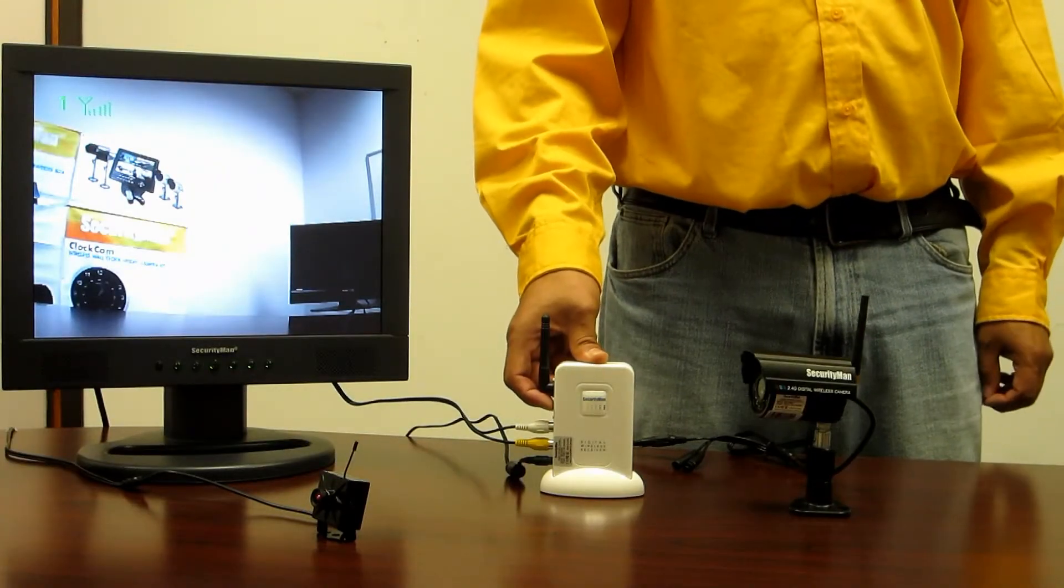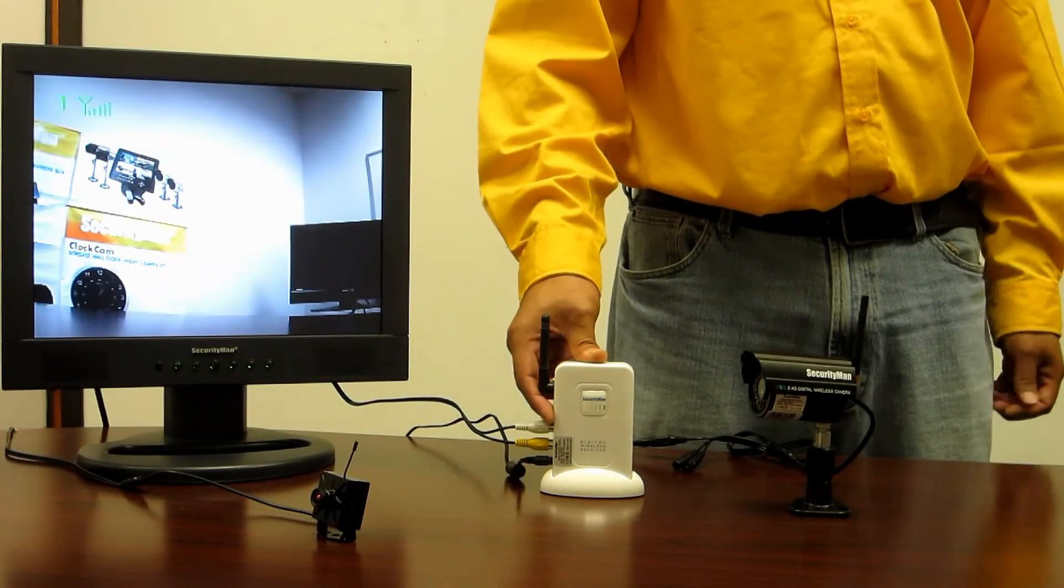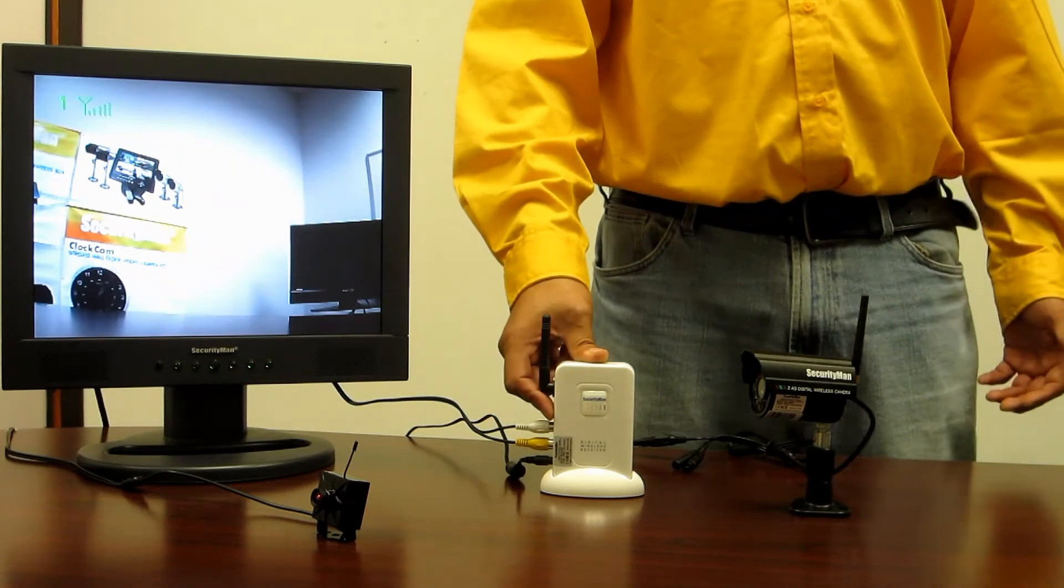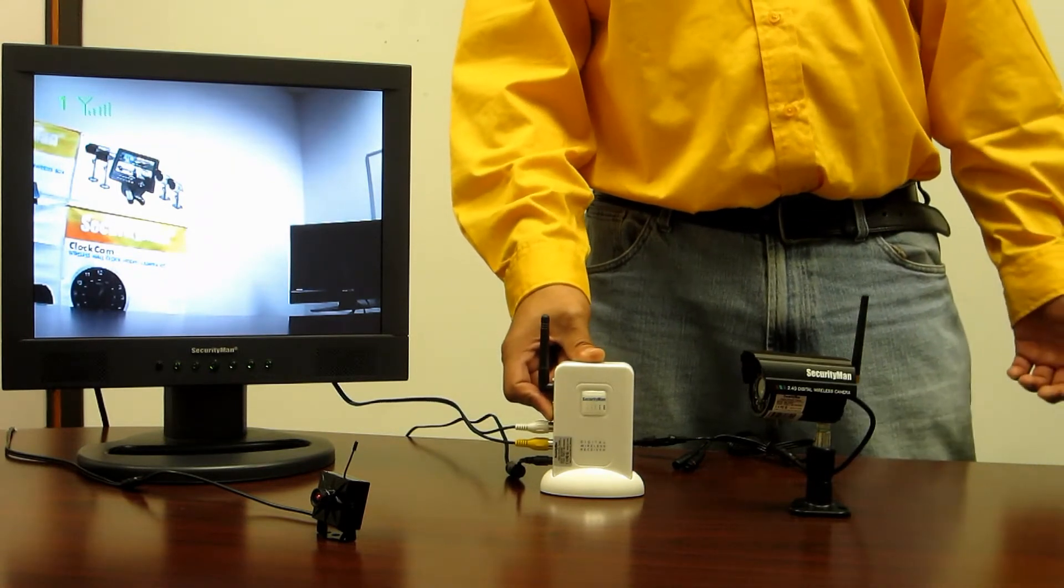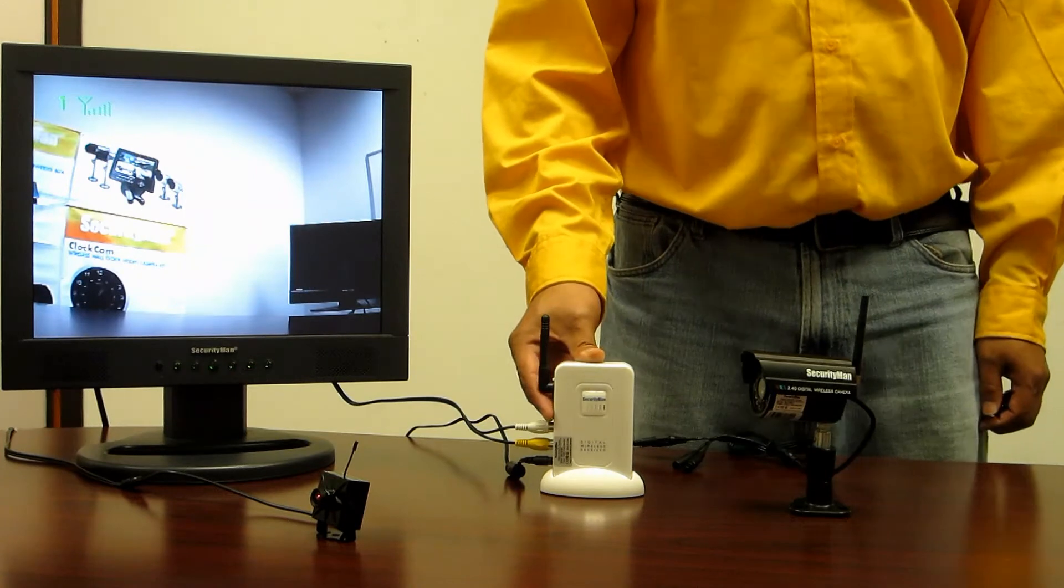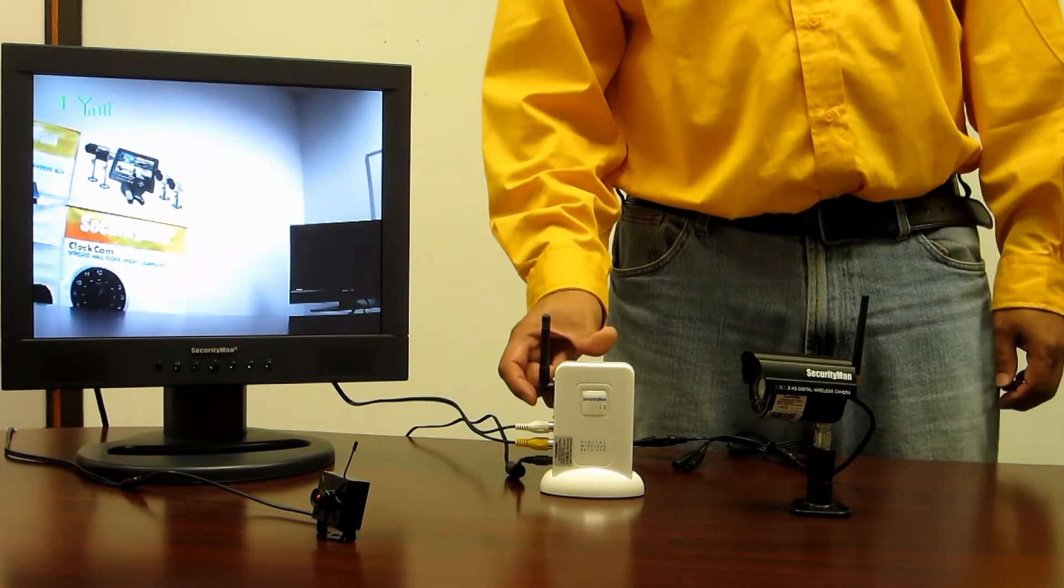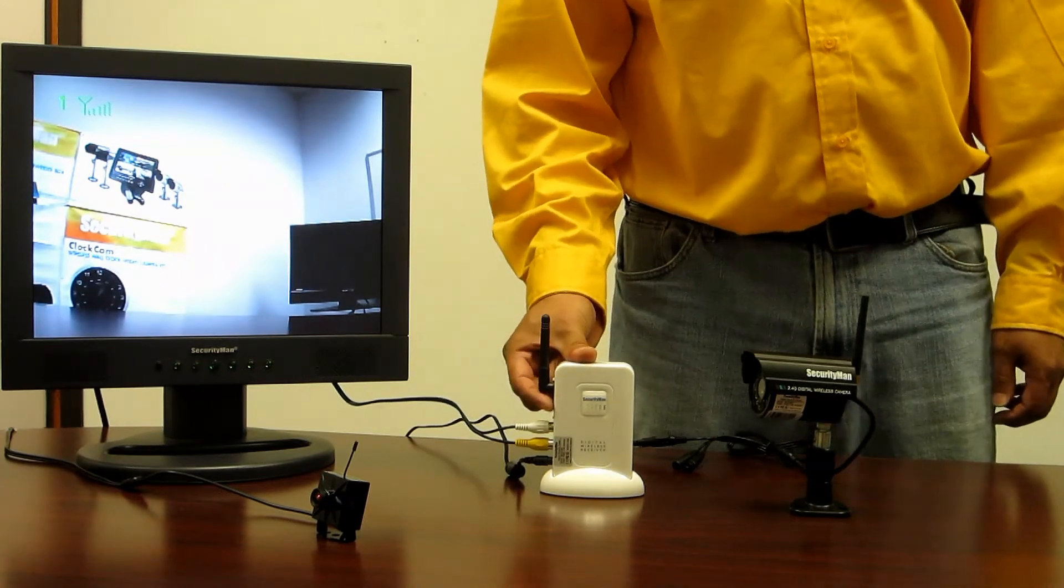I've already paired four cameras to the receiver, so now I'm going to demo how easy it is to switch between each camera. From camera one, I'm going to press the channel button located on the side of the receiver to get to channel two.